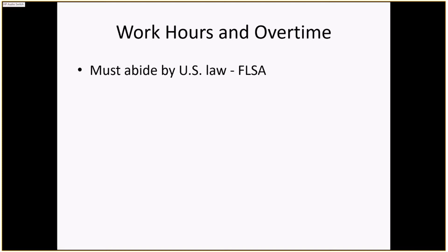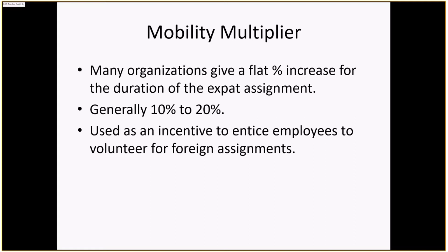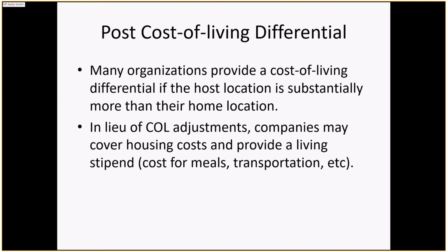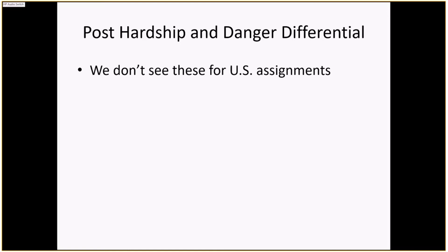Regarding wages and overtime, you need to understand whether employees abide by US law or local law. The mobility multiplier is a flat percentage increase — generally 10–20% — for the duration of the expat assignment, used as an incentive to entice employees to volunteer for assignments. The post cost-of-living differential compares home country versus host country; some companies cover housing costs and provide a living stipend for meals and transportation rather than adjusting salary directly. The post hardship and danger differential applies to posts with different quality of life, health hazards, war, or other risks.